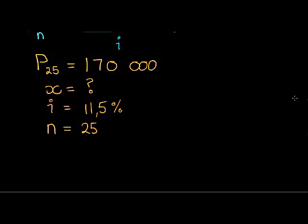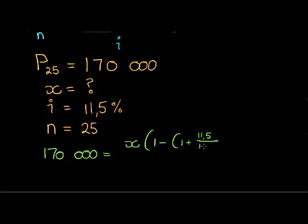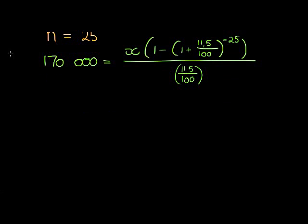We have, let me go down, more space. We then have 170,000 is equal to X, is still unknown, 1 minus 1 plus 11.5% over 100. The number of payments is 25, so we're taking negative 25 in the exponent there, and we're dividing with 11.5 over 100.